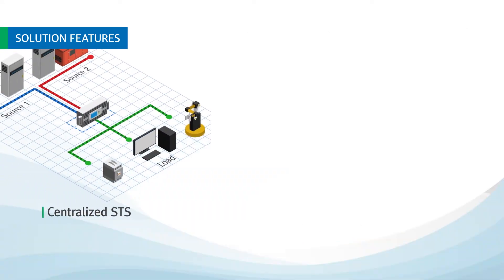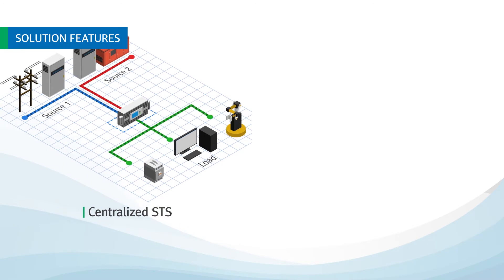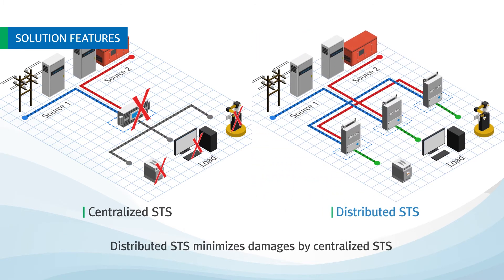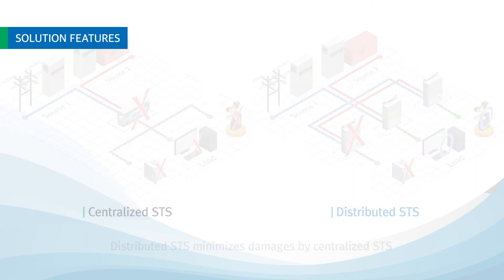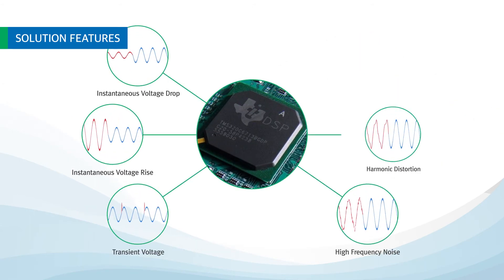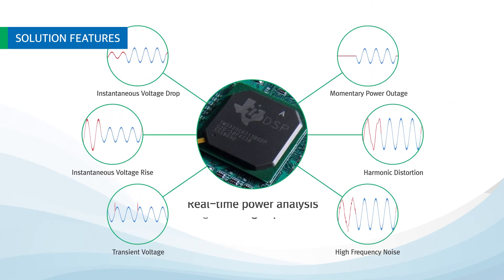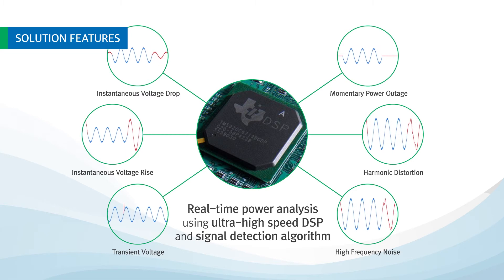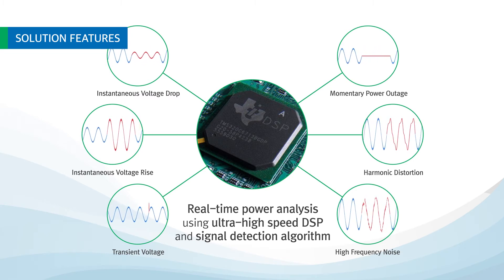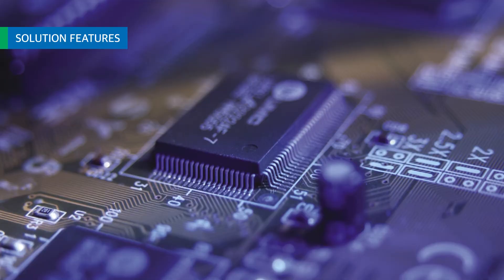In a centralized STS system, all loads are damaged when STS operation fails or the load is shorted, but in a distributed STS system, spreading damage to other loads is prevented. Real-time analysis of the input power source by a high-performance digital signal processor and signal detection algorithm enables stable power supply at all times.